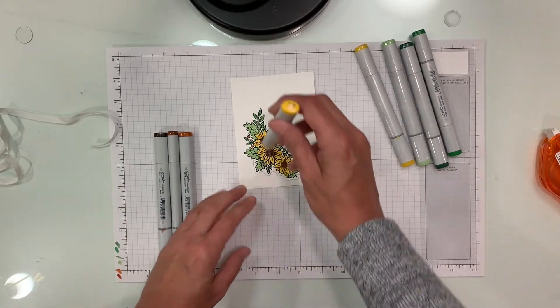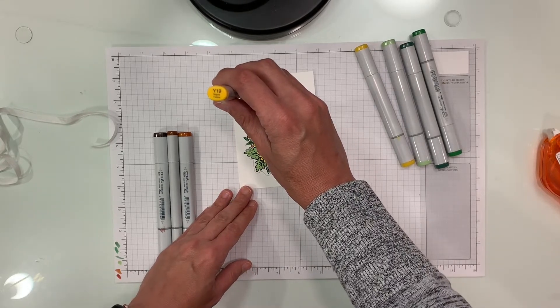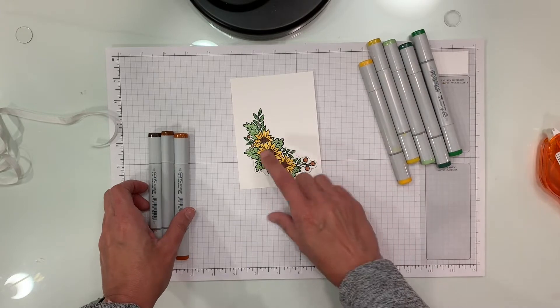For the sunflowers, I colored all of the leaves in Y15 Cadmium Yellow and then I highlighted the center of the flowers where the lines are in the stamped image with Y19 Napoli Yellow.